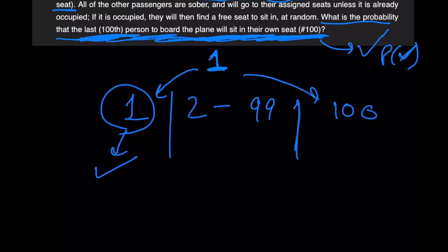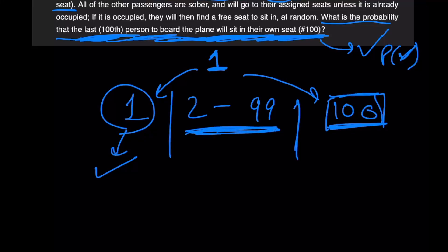Now let's think about the case where person number one chooses seat 100. In that case, since seat 100 is now already occupied, no matter what happens, person 100 is not going to be able to sit on seat 100. All of the other guys are still going to sit on their own seats, and when person 100 comes along, he's going to have to sit on seat number one. So in this case, we are guaranteed to hit failure.